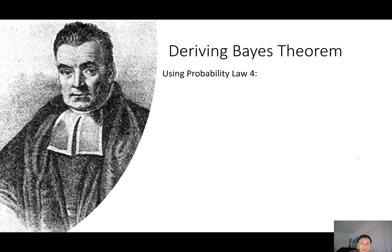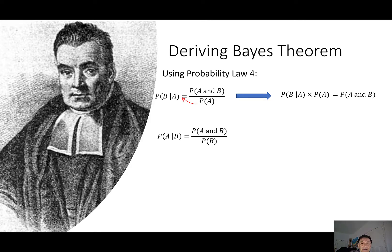So how do we derive Bayes' theorem? Well, as I said, you just use probability law four. Now, what we can do is we can rearrange that to come up with that formula. So all we're doing is we're just multiplying both sides here by a probability of a, and we get that formula there. Now, probability law four doesn't distinguish between a and b. So it's also the case that the probability of a given b is equal to the probability of a and b divided by the probability of b. And we can divide the same thing again and come up with that formula.